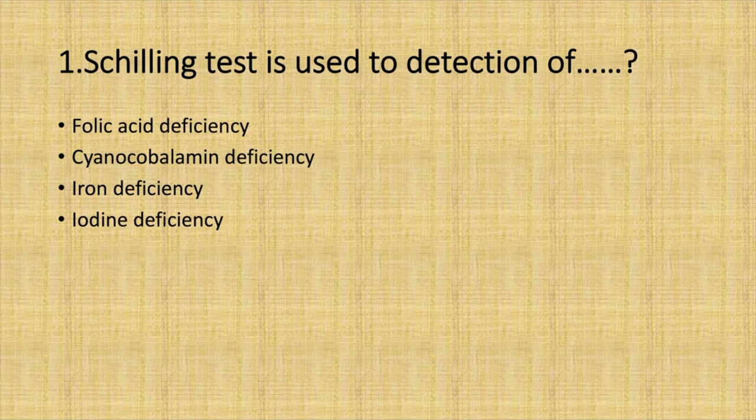Schilling test is used for detection of: Option A. Folic acid deficiency. Option B. Cyanocobalamin deficiency. Option C. Iron deficiency. Option D. Iodine deficiency. Answer: Option B. Cyanocobalamin deficiency.